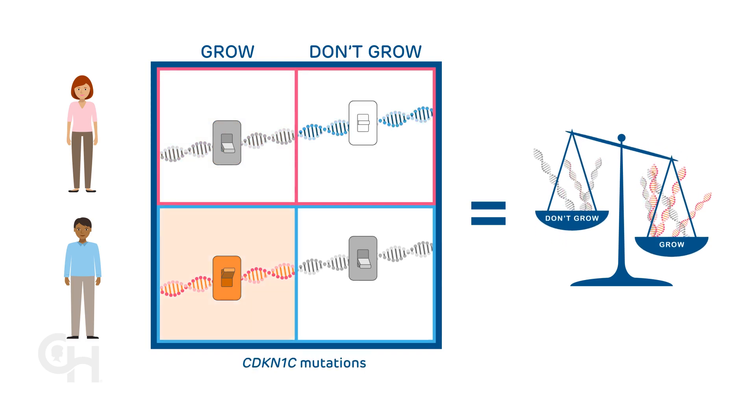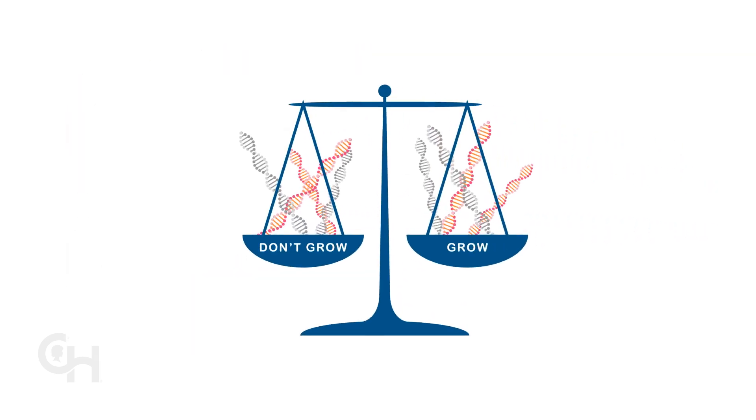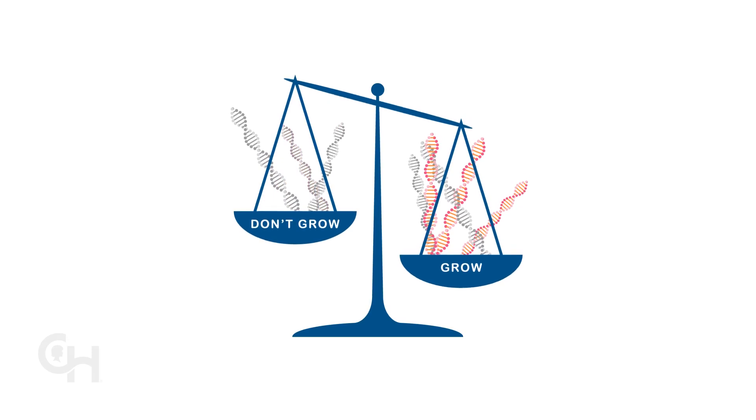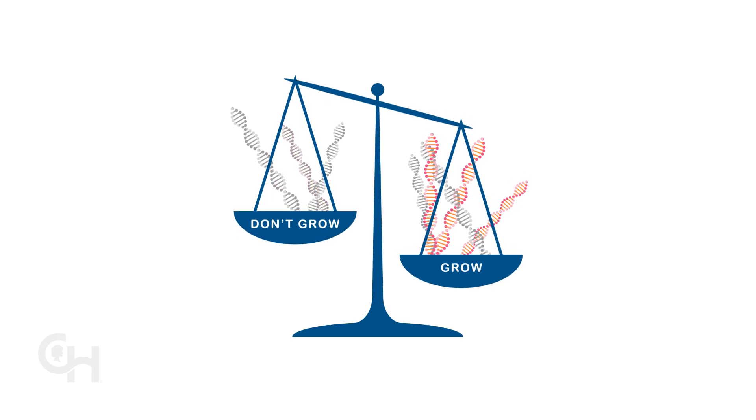CDKN1C mutations occur when the don't grow switch is broken from the mother because of a change in the DNA. Other rare causes such as duplications, deletions, or chromosomal rearrangements can lead to an increase in grow signal or a decrease in don't grow signal, also resulting in BWS.